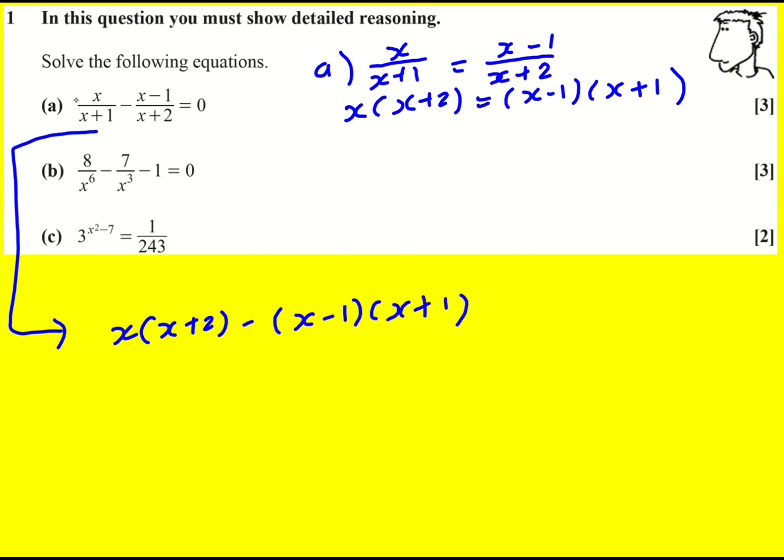Because when you times the left hand term by x plus 1 it just cancels out there and the right hand term by x plus 2 it cancels out there. So you get the same thing equal to 0 but anyway let's keep going like I was doing originally.